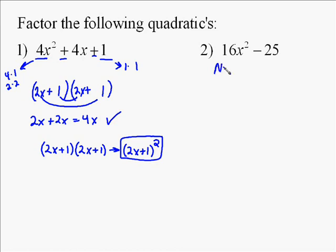That's when you have no x term, and what we call it is the difference of two squares. In this particular problem, the first term is 16x squared, which is 4x times 4x. The second term is twenty-five, which is five times five. They're both perfect squares.